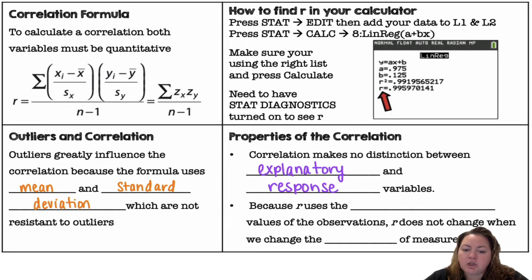Properties of the correlation. Correlation makes no distinction between the explanatory and response variable, your x and your y variable. Because R uses the standardized values of the observations, R does not change when we change the units of measurement. Remember z-scores have no units, so correlation also has no units.